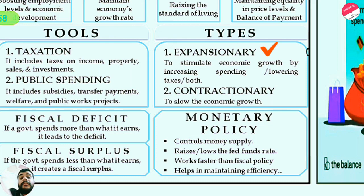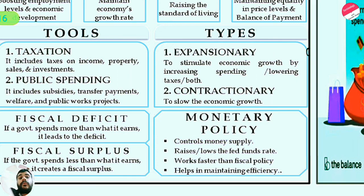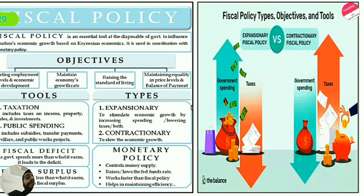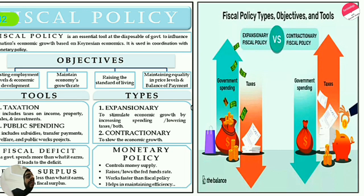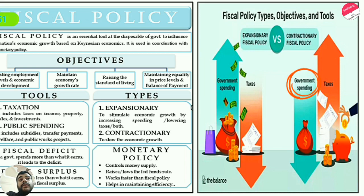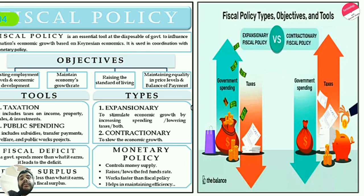Expansionary fiscal policy stimulates economic growth by increasing spending, lowering taxes, or both. Contractionary fiscal policy slows economic growth by decreasing spending and raising taxes. In the diagram, expansionary fiscal policy shows government spending rising and taxes decreasing, while contractionary fiscal policy shows government spending decreasing and taxes increasing. In this session we have learned what fiscal policy is and the role of the government in fiscal policy.